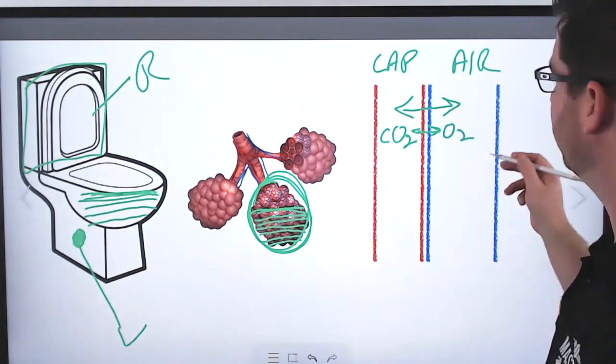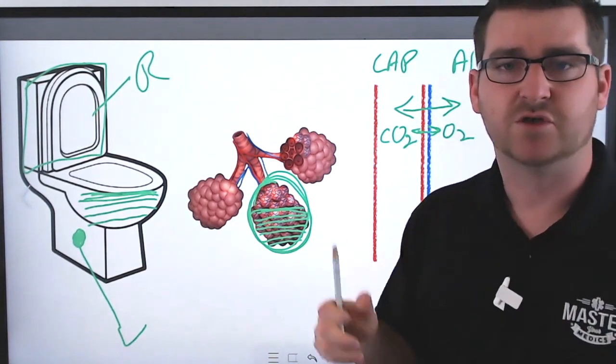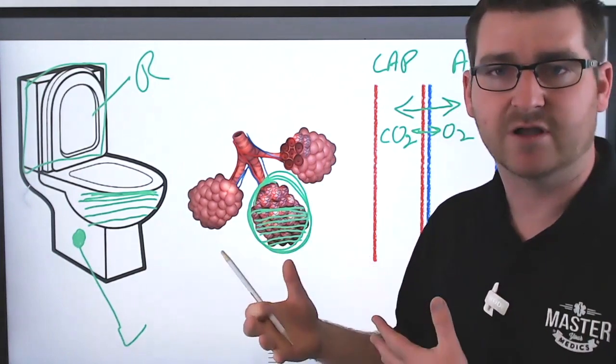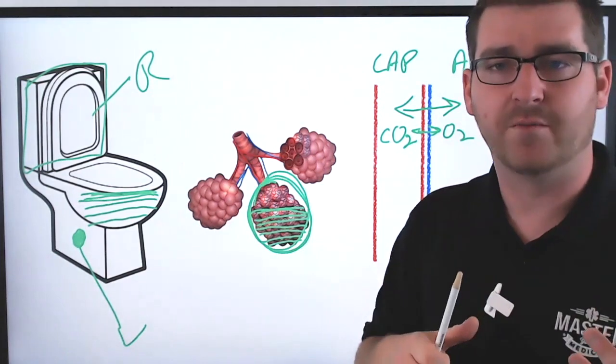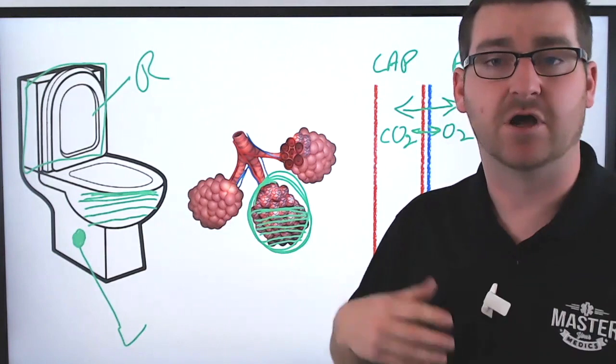passing back and forth between the two spaces. So the CO2 is leaving the capillaries and then oxygen is coming from the airspaces into the capillaries to oxygenate our blood.